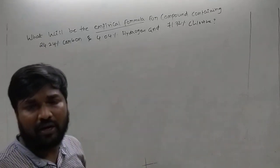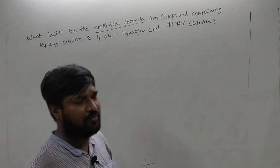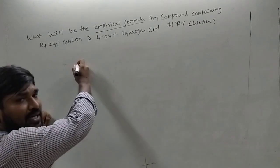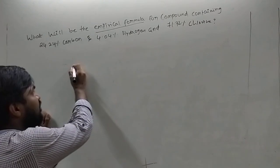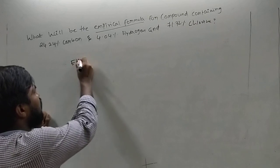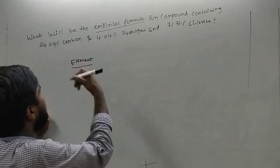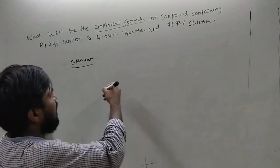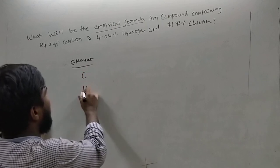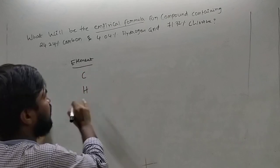So, very simple — we have to follow some steps for solving these kinds of problems. The first step is to write the elements. The elements we are using are carbon, hydrogen, and chlorine.